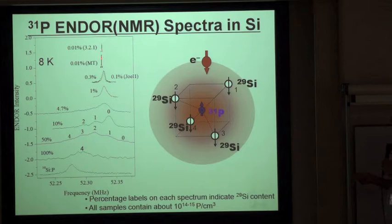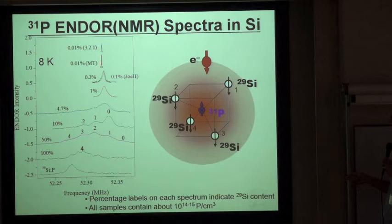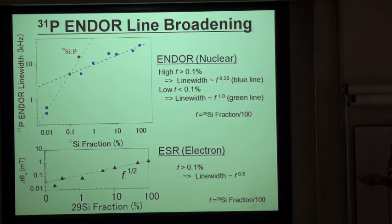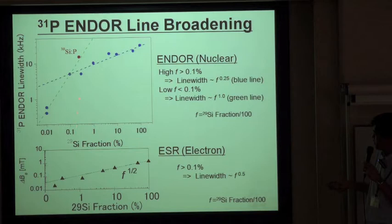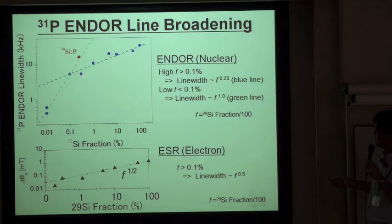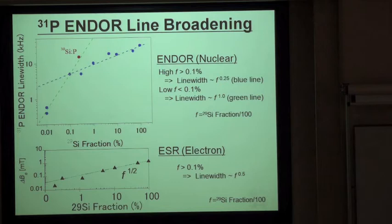There is a notable jump in peak width between 0.01% and 0.3% background 29Si. For background concentrations larger than 0.1%, the peak width does not change steeply. But when the background 29Si is suppressed down to 0.03%, the peak half-width becomes very sharp. Only by suppressing the background 29Si can we get a sharp, well-defined peak, which is necessary for quantum information processing.